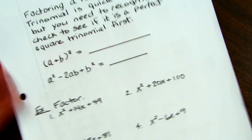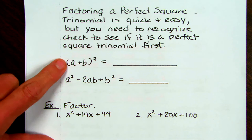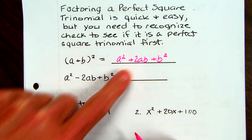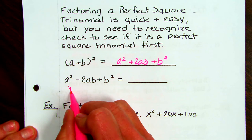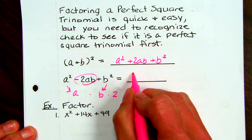Now let's look at factoring. Factoring a perfect square trinomial is quick and easy, but you have to recognize that you have one first. Here are the formulas again: square the first, first times last times 2, and square the last. Now we're going to start with the trinomial and factor backwards. What is the square root of A squared? That's A. And the square root of B squared is B. Is A times B times 2 equal to 2AB? Yes. So it factors into — and because it's a minus — A minus B, squared.